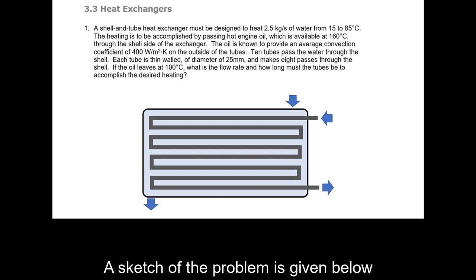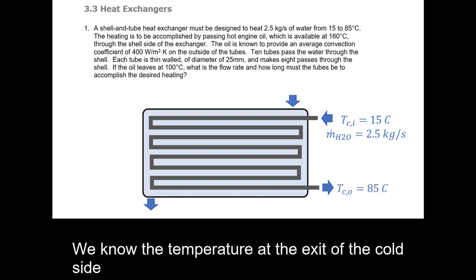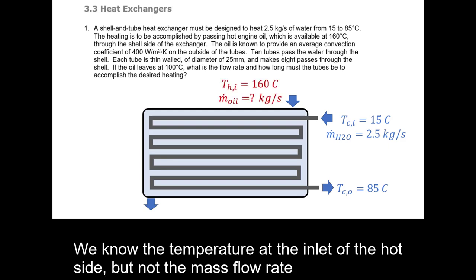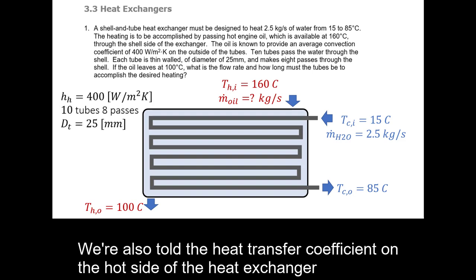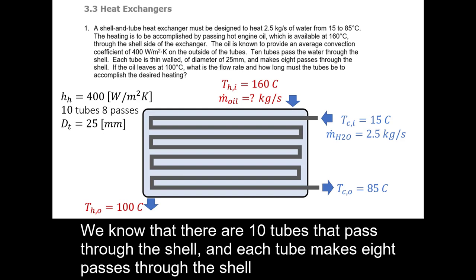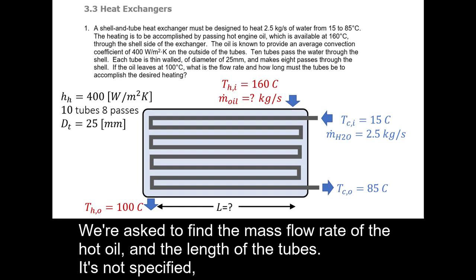A sketch of the problem is given below. We know the cold fluid enters at a particular temperature and mass flow rate, and we know the temperature at the cold side exit. We know the hot side inlet temperature but not the mass flow rate, and we know the hot side outlet temperature. We're also told the heat transfer coefficient on the hot side. There are 10 tubes each making 8 passes, and the tube diameter is 25 millimeters. We're asked to find the mass flow rate of the hot oil and the length of the tubes.